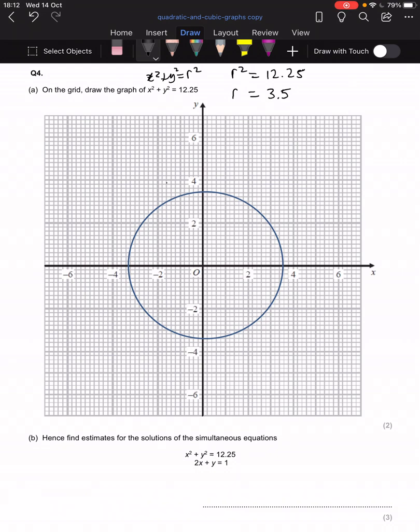Part B says, hence, find estimates for the solutions of the simultaneous equation. The first one is the circle one that we got in part A. The second one is the linear equation 2x plus y equals 1. Now, this hence means use what the answer you got or the working out that you did in part A to help you get your answer.